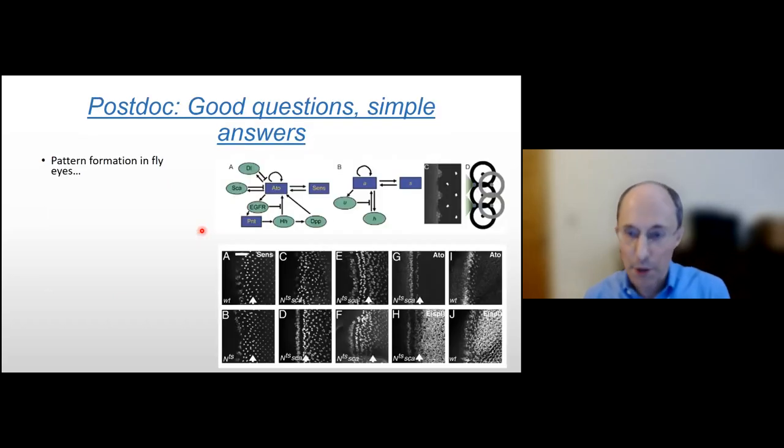Okay, so with that in mind, I went to do a postdoc with Boris Sreyman and really focused on trying to come up with good questions and simple answers to those questions. I worked a lot on pattern formation in fly eyes, we drew these sorts of network diagrams, tried to simplify them. And one of my proudest accomplishments still is that we were able to predict that the normal pattern in fly eyes with isolated cells can sometimes turn into a pattern of stripes when you have the correct mutant.